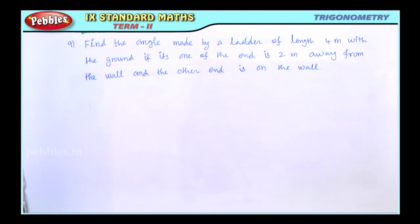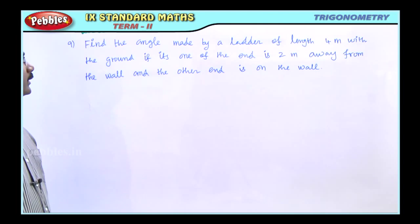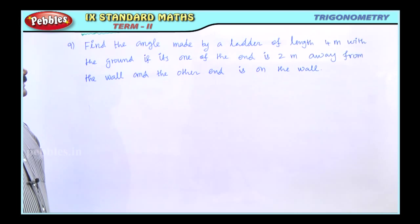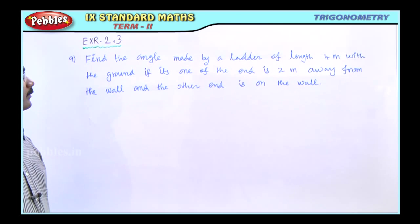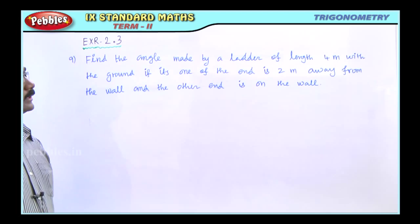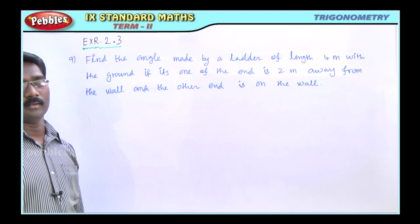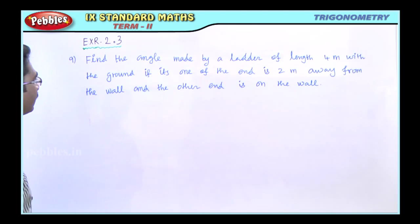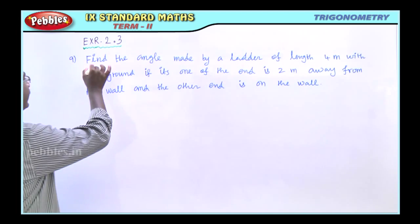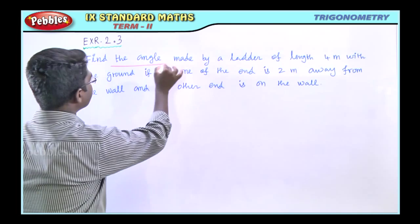9th problem: find the angle made by the ladder of length 4 meters with the ground, if one end is 2 meters away from the wall and the other end is on the wall.